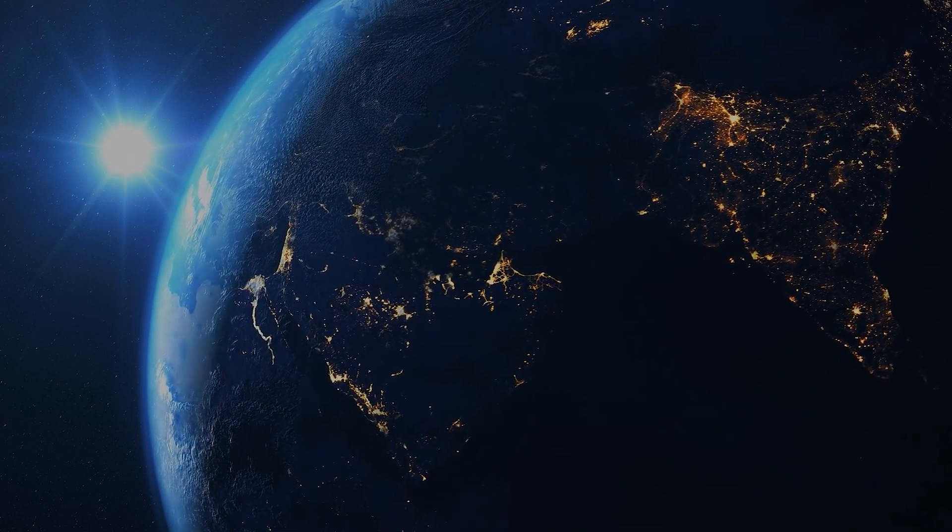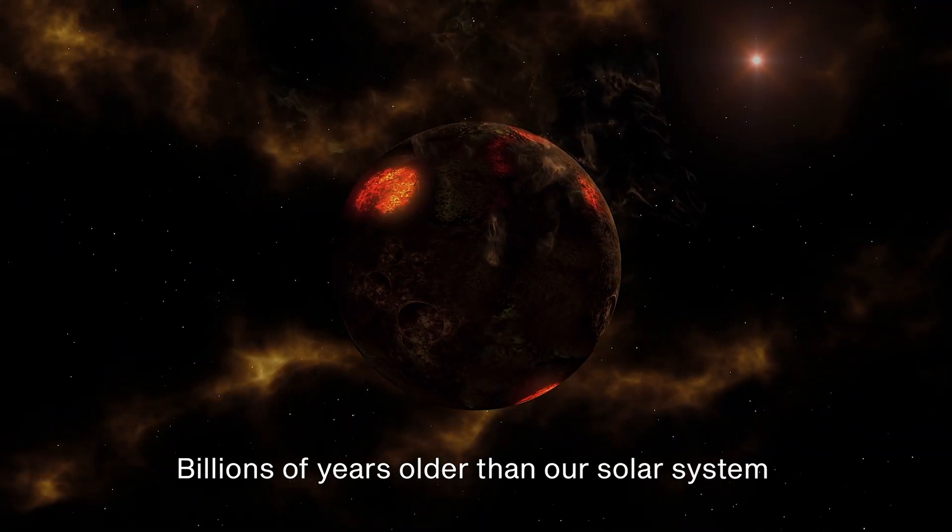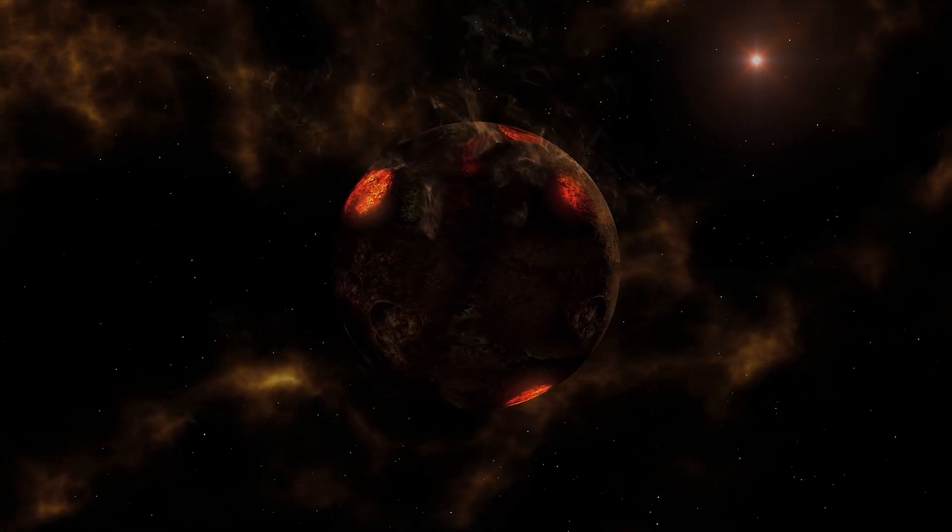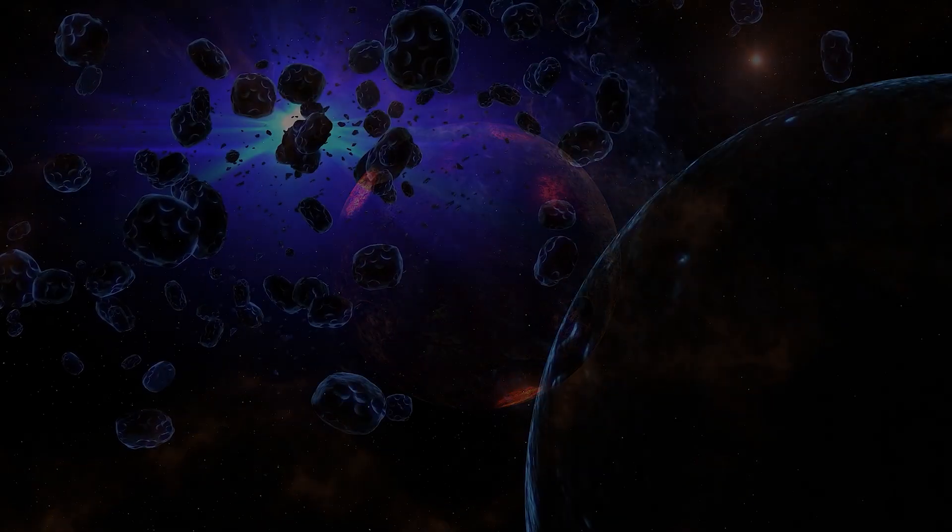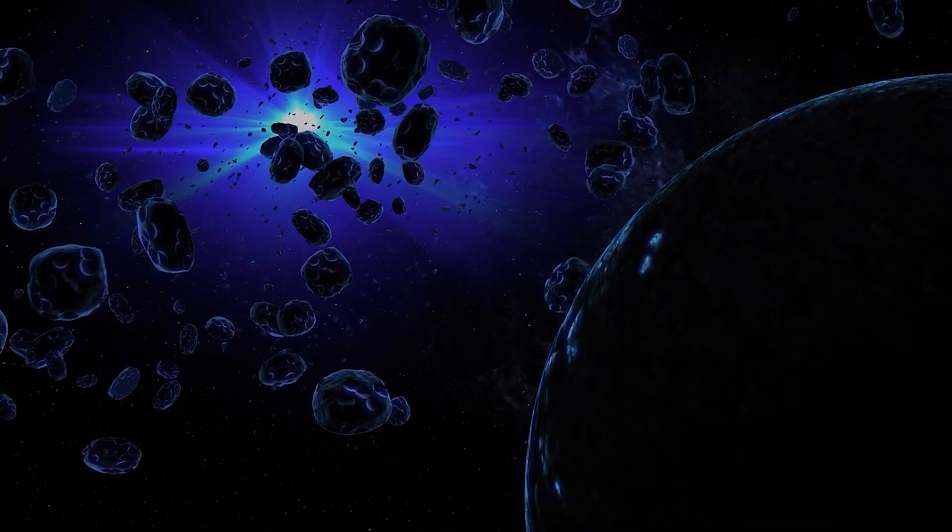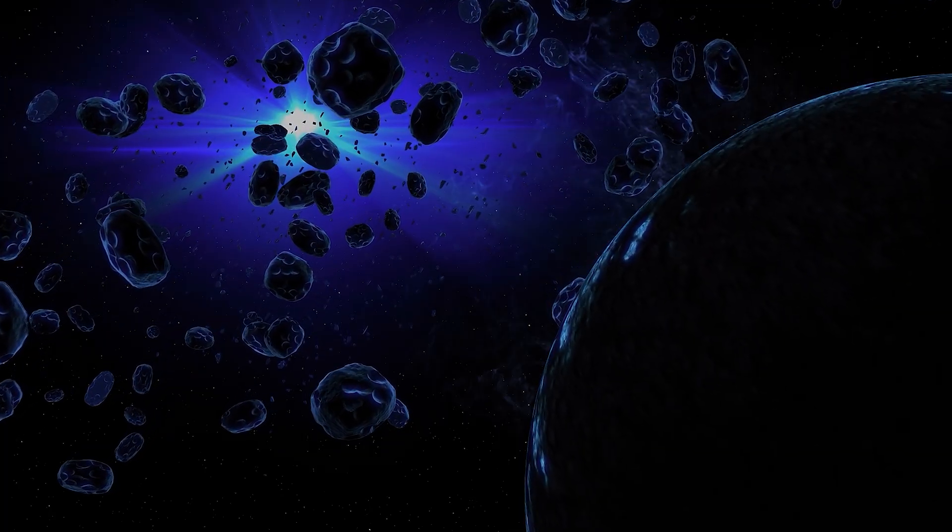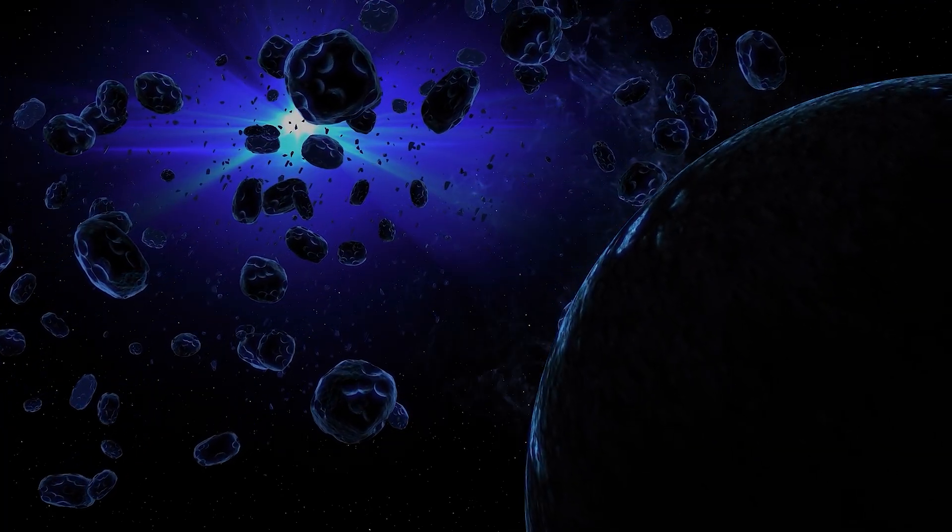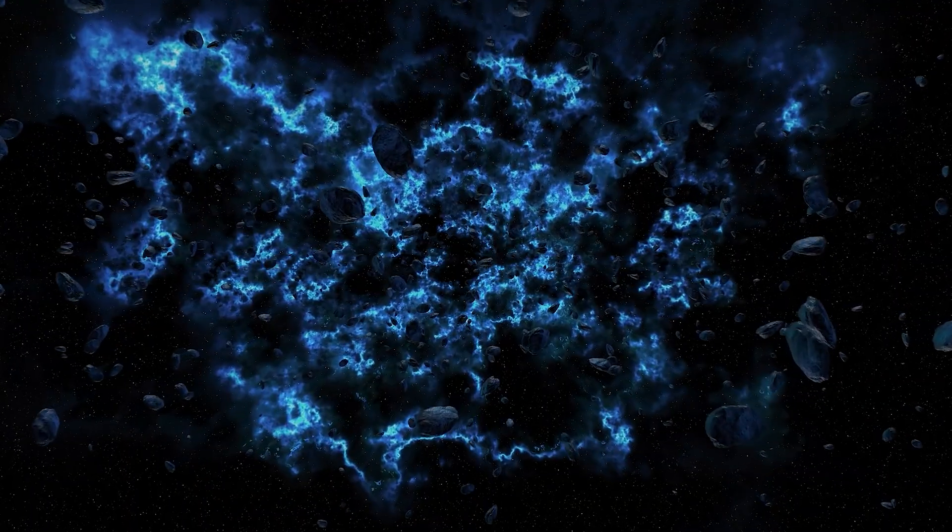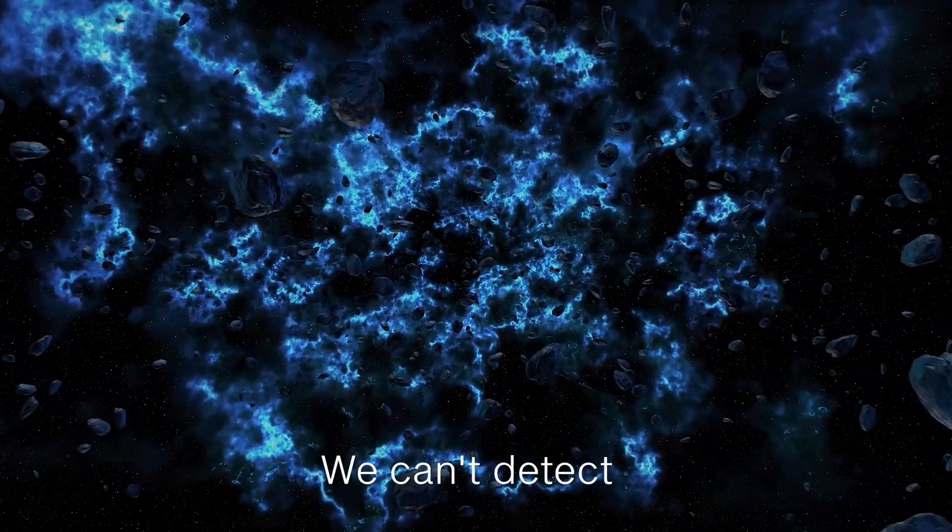Some stars and planetary systems are billions of years older than our solar system, potentially giving any civilizations that developed there a massive head start in technological development. If even a small fraction of these older civilizations survived and continued to advance, they should have achieved capabilities that would make them easily detectable across the galaxy. The fact that we don't observe evidence of these ancient, advanced civilizations suggests either that they don't exist, that they've transcended physical reality in ways we can't detect, or that they're deliberately avoiding detection.